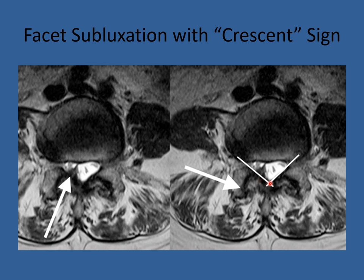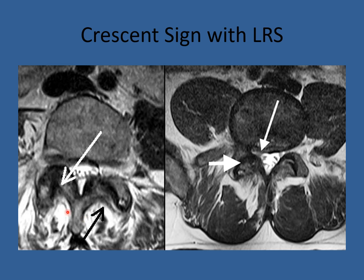I like to look at something called the crescent sign. The facets typically line up, with fronts and backs matching nicely. But if you notice the back of this facet does not match the back of that facet — in fact, this facet is subluxed into the canal. Following the crescent line here, you'll find they line up nicely on one side, but on the other there's a step-off. You can see the step-off more clearly, indicating the facet is subluxed anteriorly — that's a sign of degenerative spondylolisthesis. The crescent sign: follow the line and it abruptly ends into the facet joint itself.